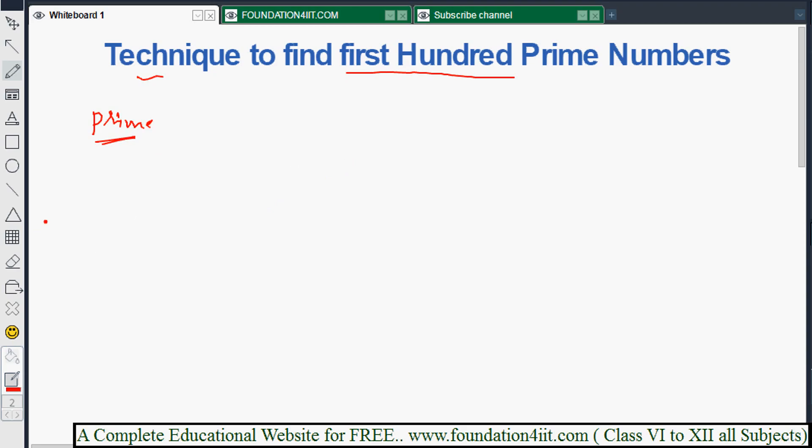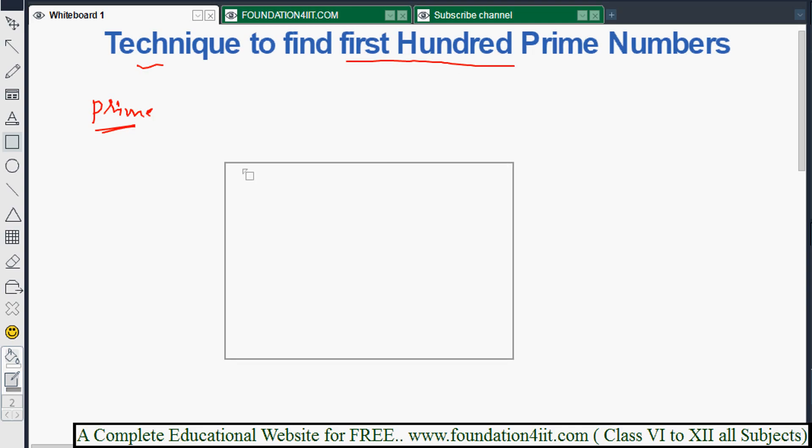First of all, we need to take one 4 by 4 size box. Listen carefully, it's very easy. In this box we'll find even twin primes and see how many prime numbers come between 1 to 100.